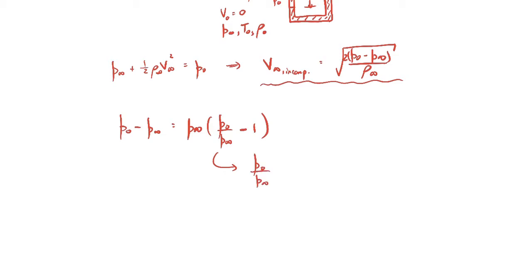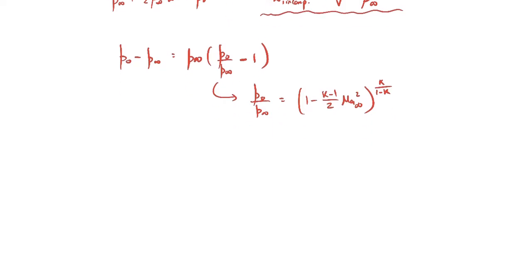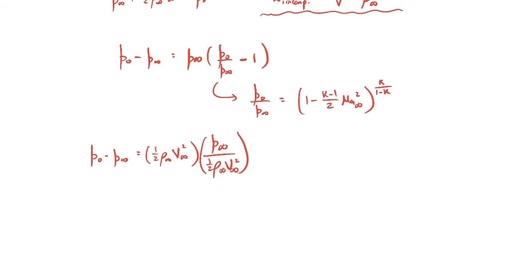P₀ over P-infinity is related to the Mach number from our isentropic relations, where k is the specific heat ratio and M is the Mach number far upstream. We substitute that expression in, and then multiply by a dynamic pressure in both the numerator and denominator. The reason is we'll end up using the ideal gas law. After substitution, the one-half rho V-squared terms cancel out to give P-infinity, and we substitute in the isentropic stagnation pressure ratio.